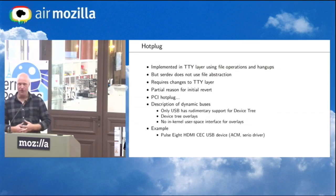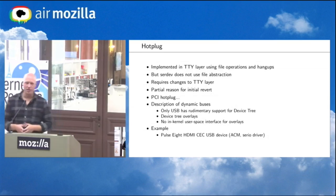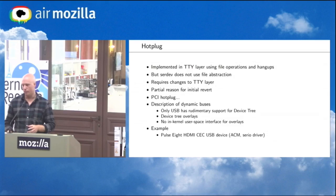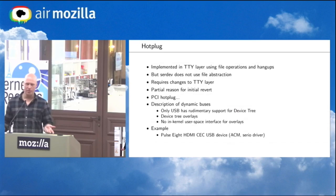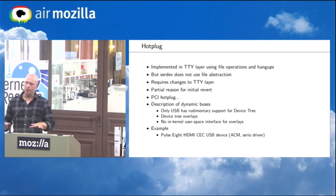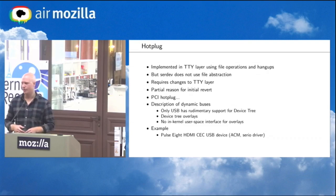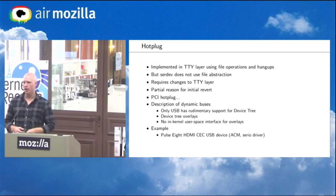Hot plug is implemented in the TTY layer using file operations and hangup callbacks. The problem is that SerDev doesn't use the file abstraction at all because it lies underneath the character device. To implement hot plug properly, it would require further changes to the TTY layer — adding barriers and flushing out data before shutting down the ports. We do still have PCI hot plug for some serial core drivers, so you could technically still trigger issues there. And there's a broader issue: we don't have a good way in the kernel of describing what's sitting on top of dynamic buses. USB only recently gained rudimentary device tree support. When you start talking about hot plugging, you don't know which port the device will be connected to. We'd probably need device tree overlays to bridge that gap, and even with overlay support in the kernel, there's no in-kernel user space interface for loading them. So there are a lot of small pieces that need to be addressed before enabling SerDev for USB serial, CDC ACM, FireWire, Greybus, and so on.